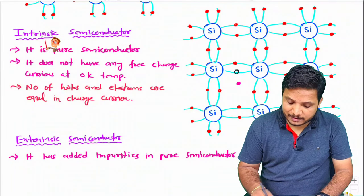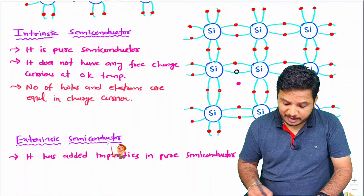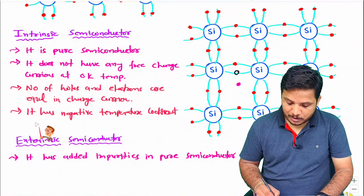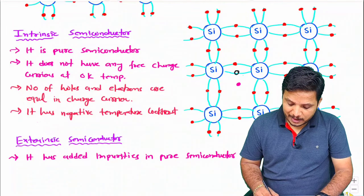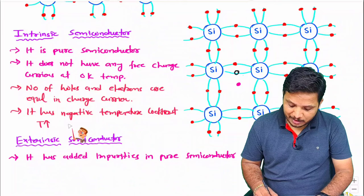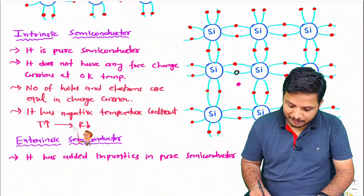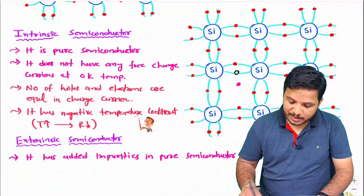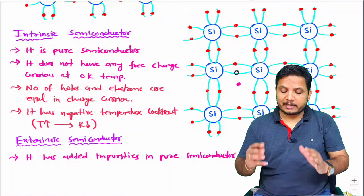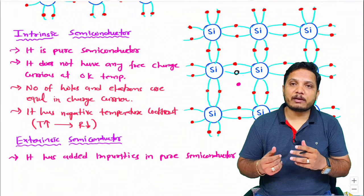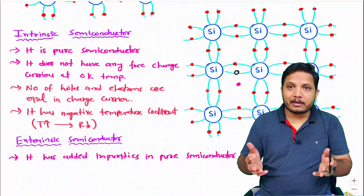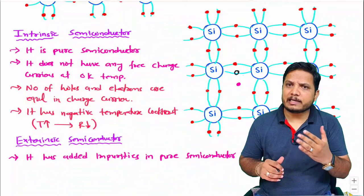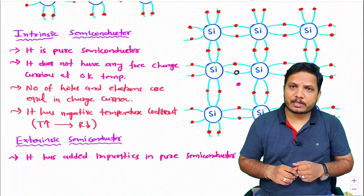You will observe that intrinsic and extrinsic semiconductor materials have a negative temperature coefficient. What is negative temperature coefficient? If you increase temperature, then resistivity will decrease. This means the temperature coefficient is negative. So in intrinsic semiconductor material, as you increase temperature, the resistance of that material will decrease — meaning it has a negative temperature coefficient.